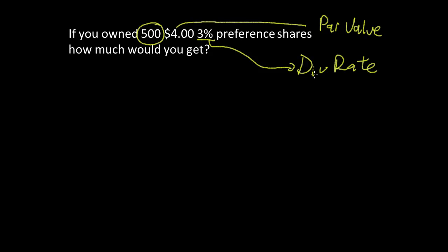Preference shareholders get a fixed return every single year. In this case, it's a 3% return on their four dollars. You might be buying them above par or below par, however it doesn't matter - you still get that 3% back.